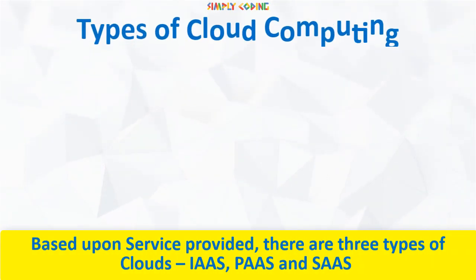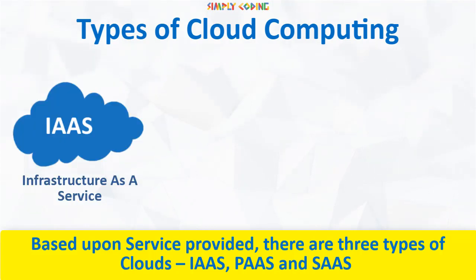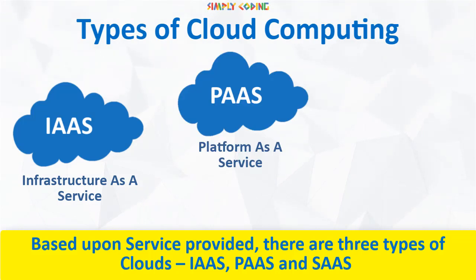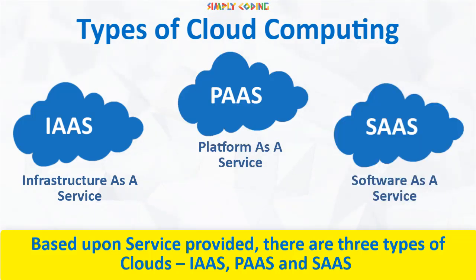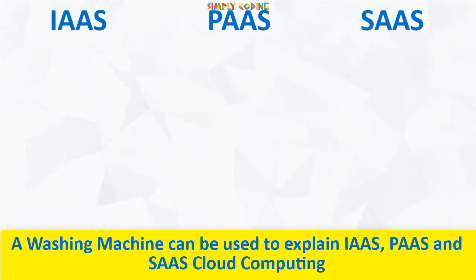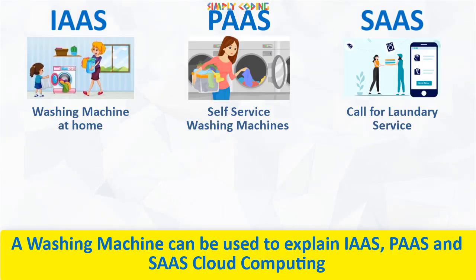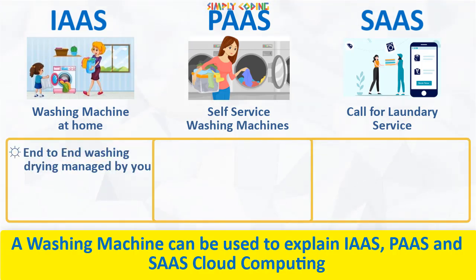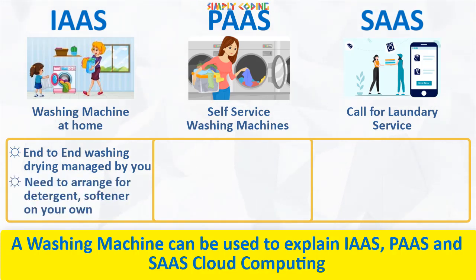From a services perspective, there are three types of cloud: IaaS, which is infrastructure as a service; PaaS, which is platform as a service; and SaaS, which is software as a service. A washing machine can be used to explain them. Suppose you want to do laundry. The first option is IaaS, or the infrastructure at home option, where you have a washing machine at home. Everything, from washing to drying, is managed by you. You need to buy washing powder and anything else you need.